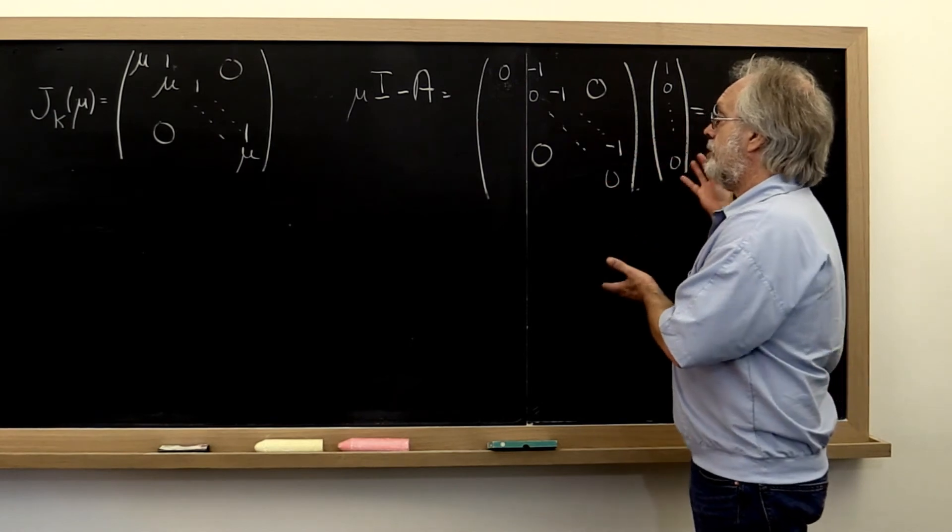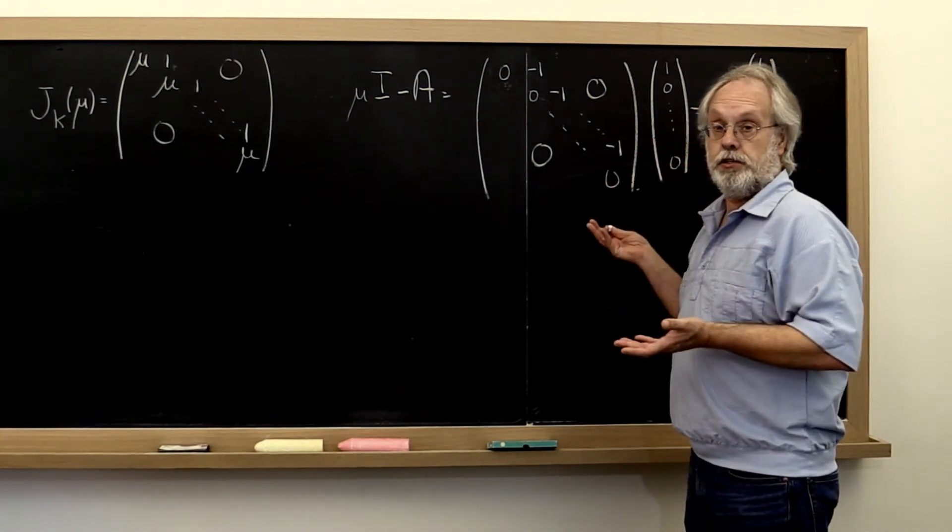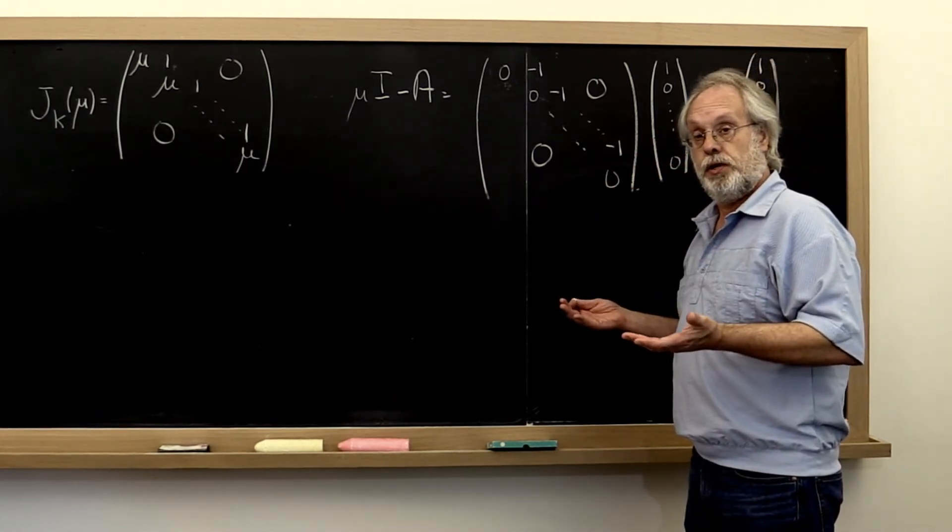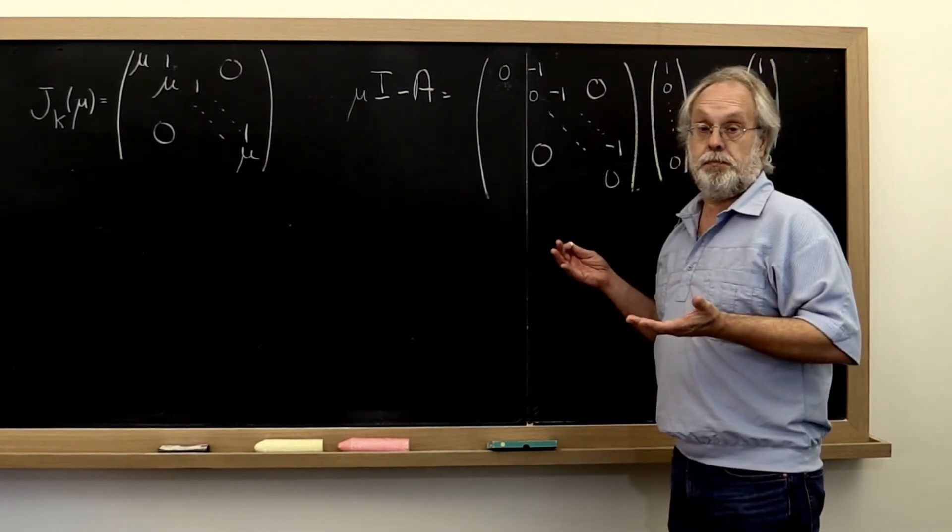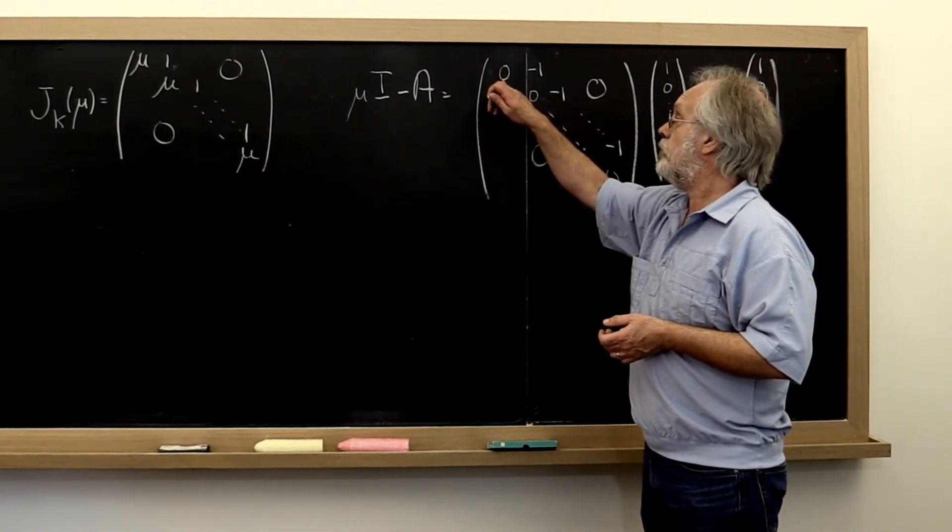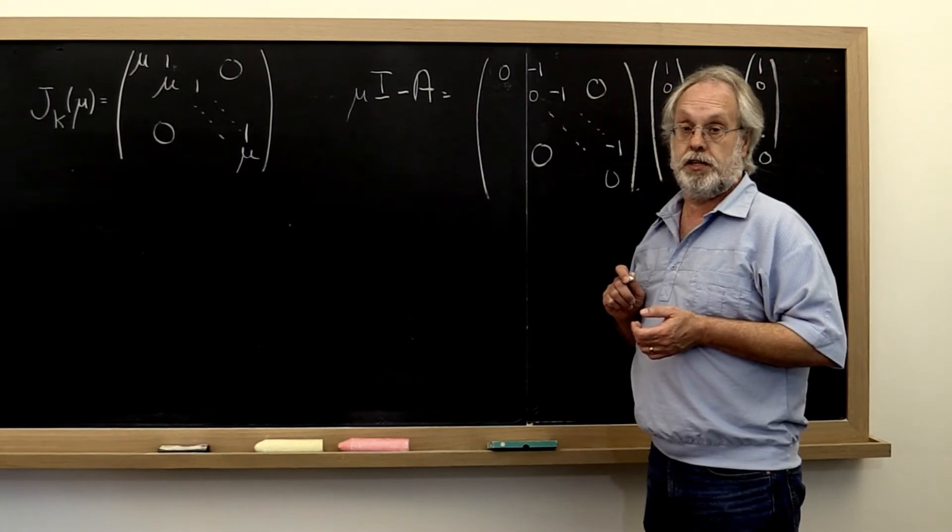And then it tells you how to find vectors in the null space, and it also tells you what the dimension of the null space is. It's equal to the number of pivots that you find.